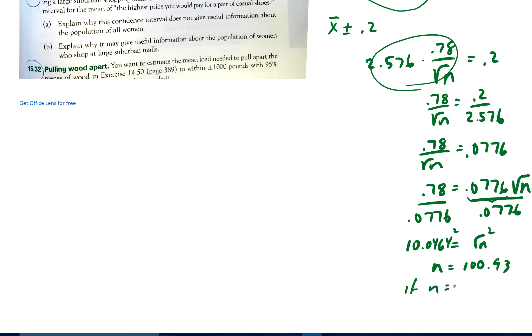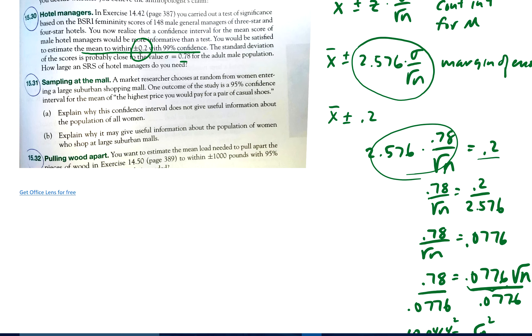So if N is equal to 101, then I know my margin of error will be less than 0.2, which is what we asked it to be because we want it to be within 0.2 of the mean of X bar. So there we go.